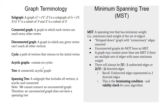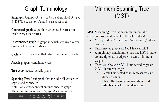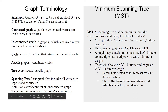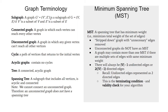A spanning tree is a subgraph — I use vertices and edges from the original graph — but I have to include all vertices from the graph. I need it to be acyclic and connected, so it needs to be a tree. I just need to pick some edges from this graph that don't introduce any cycles but still connect the entire graph. If I don't start with an already connected graph, there's no way to pick edges that give me a connected graph, so it doesn't have a spanning tree.